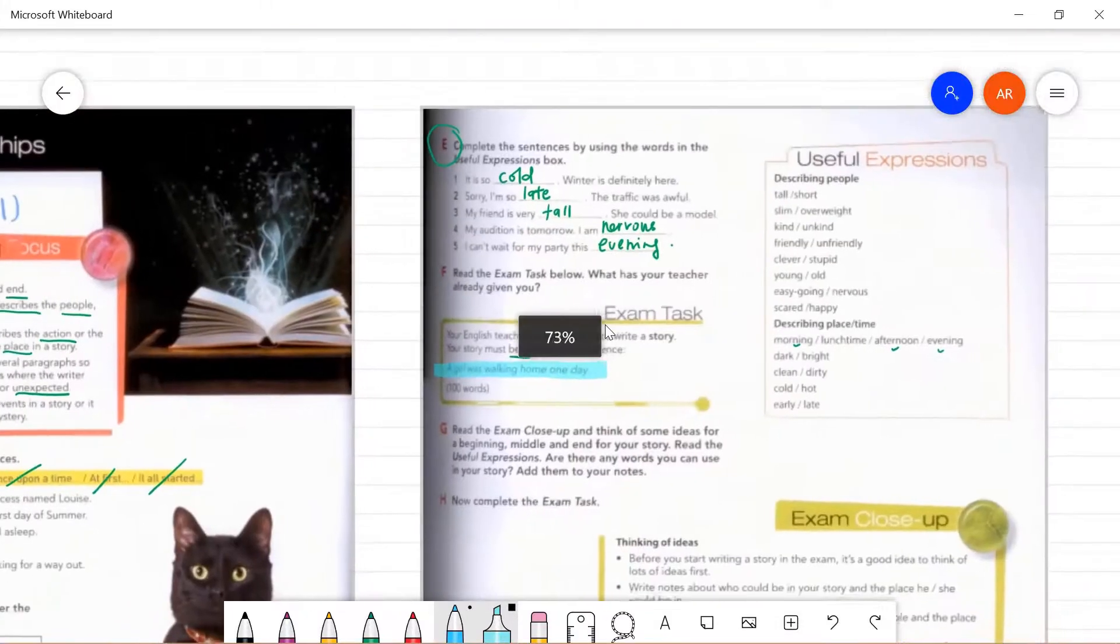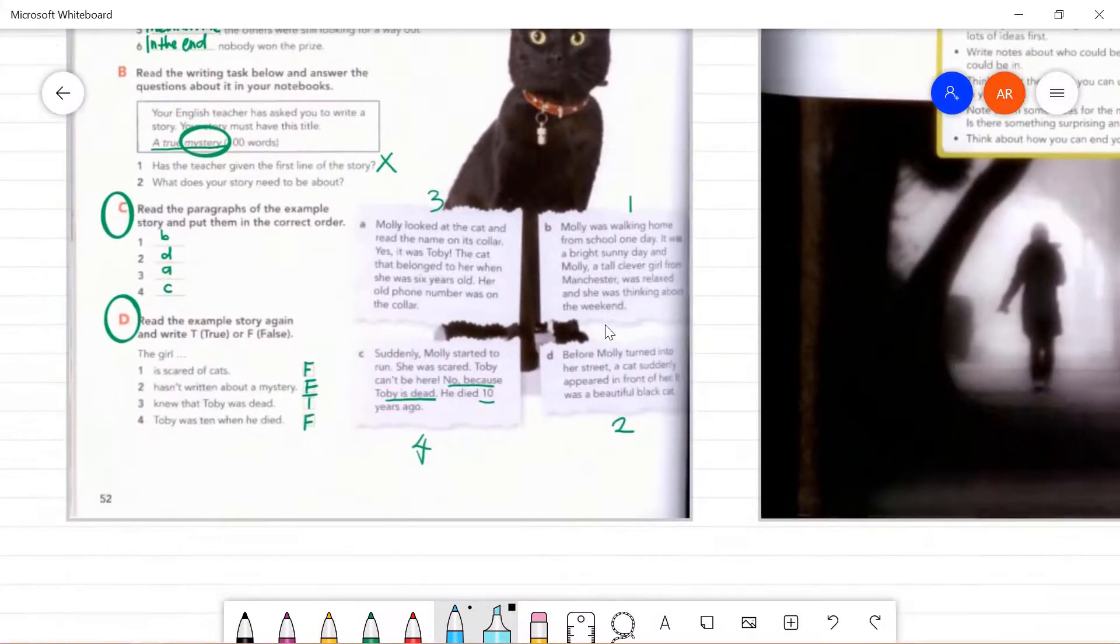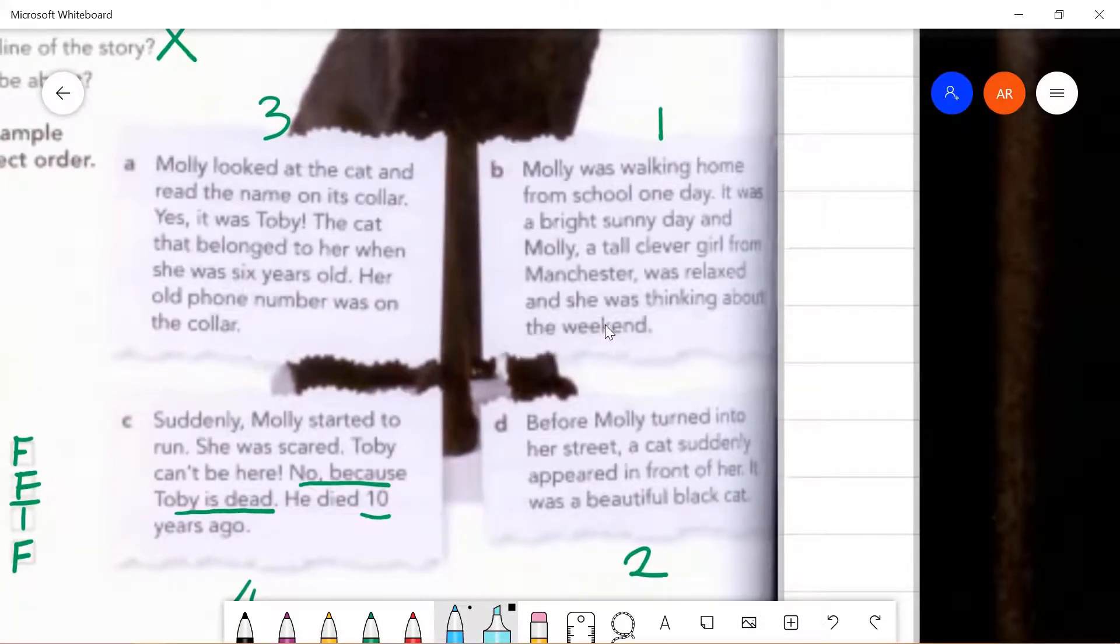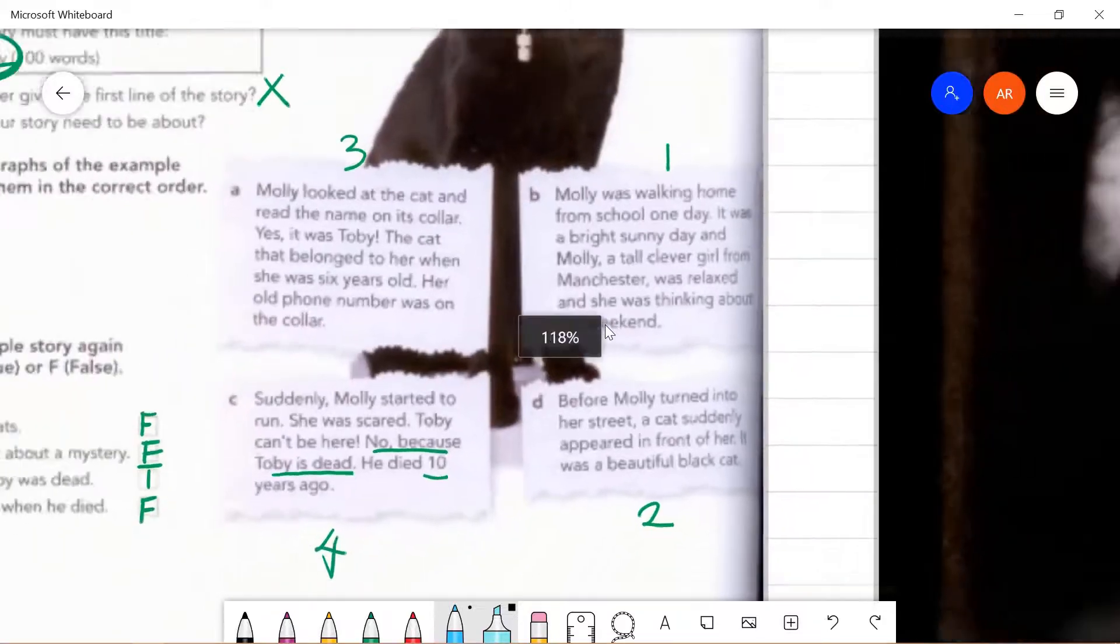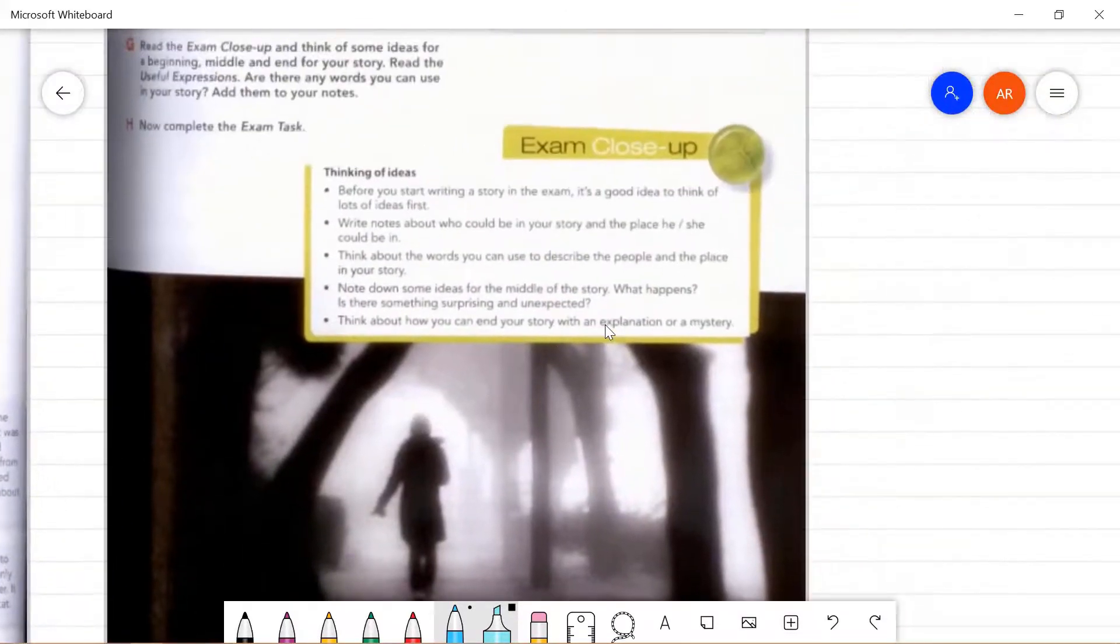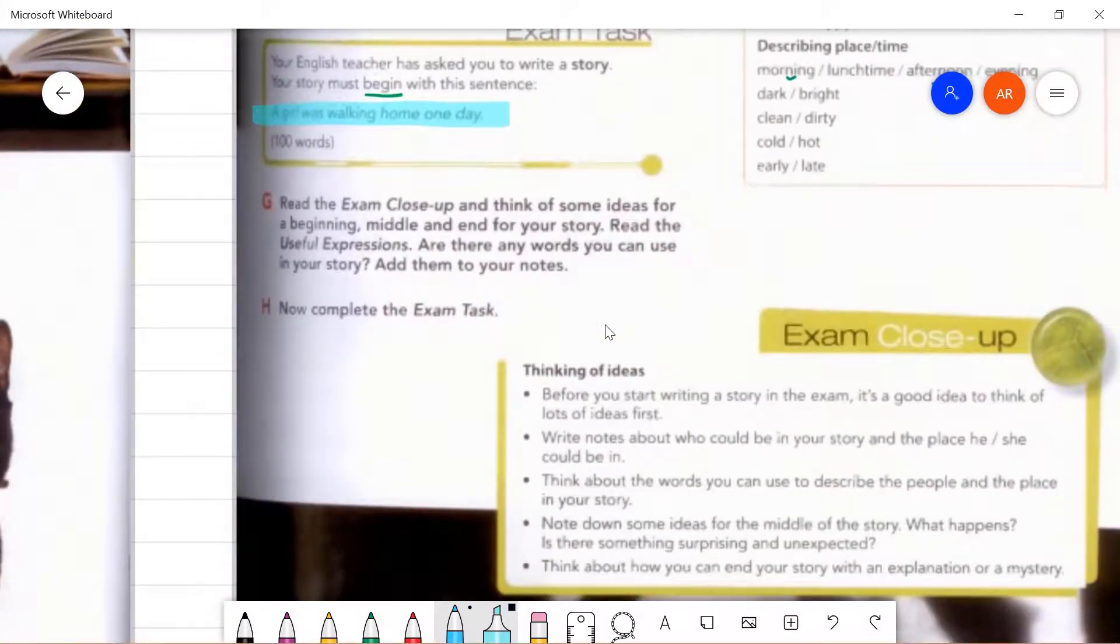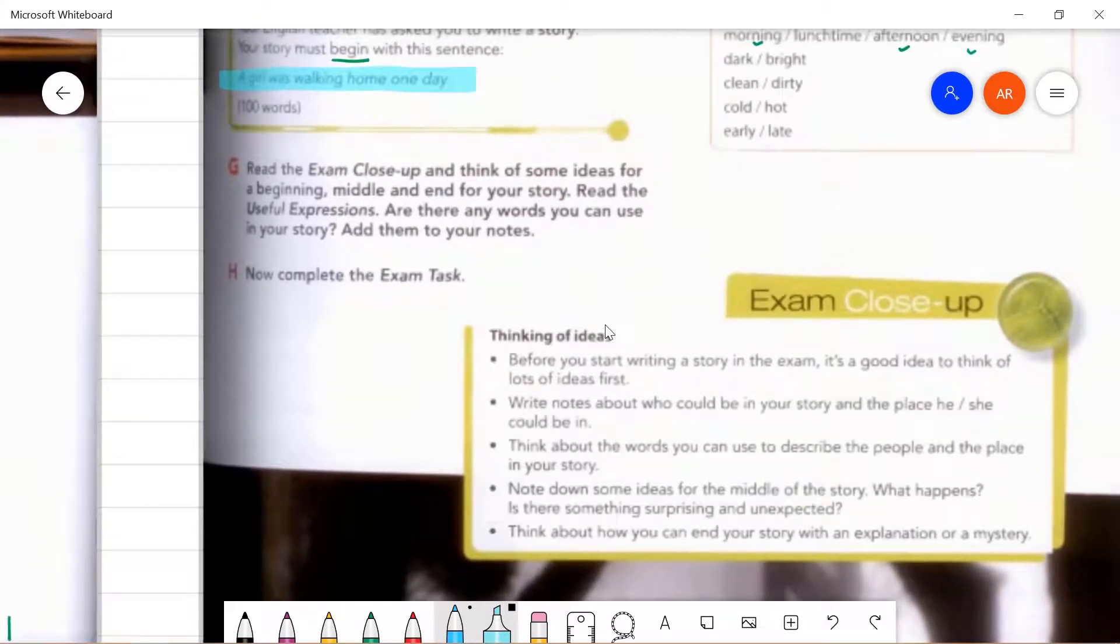So basically 100 words is about this long. Remember we did this, a sample story. 100 words should be about this long. It should not be long. Alright. Let's look at task C.